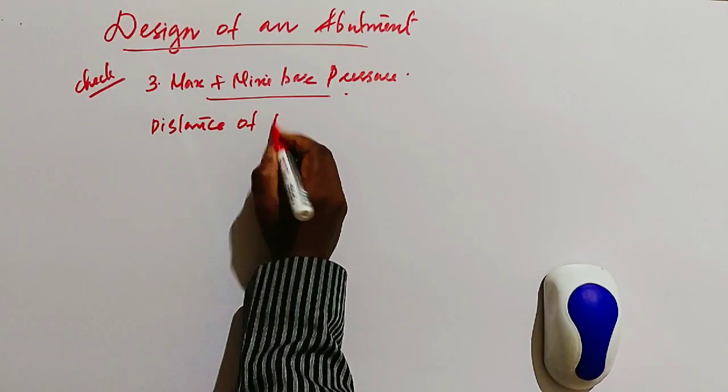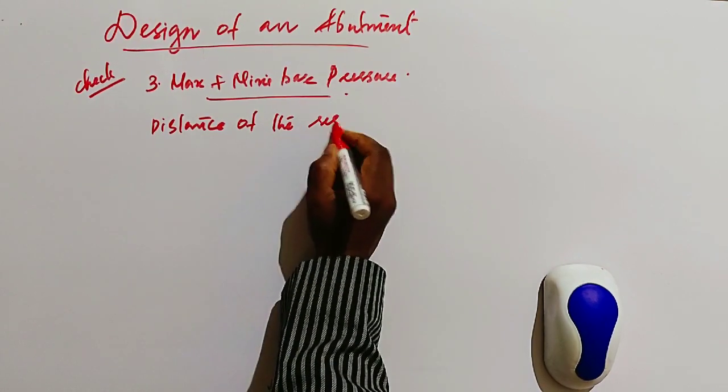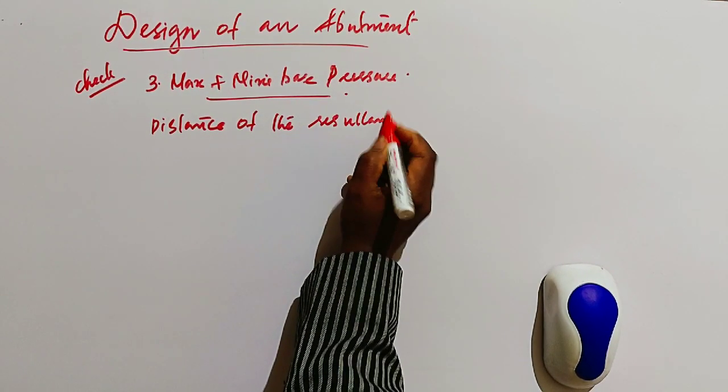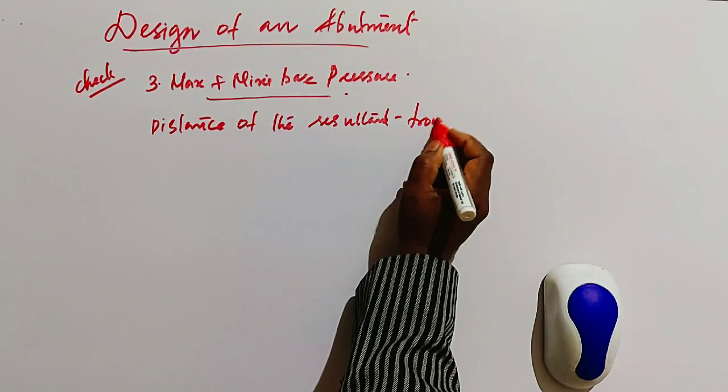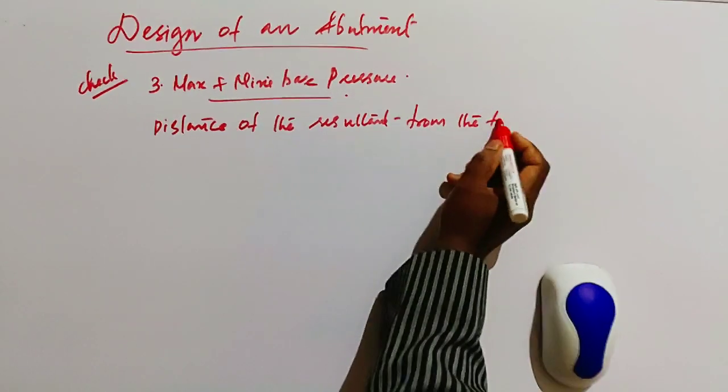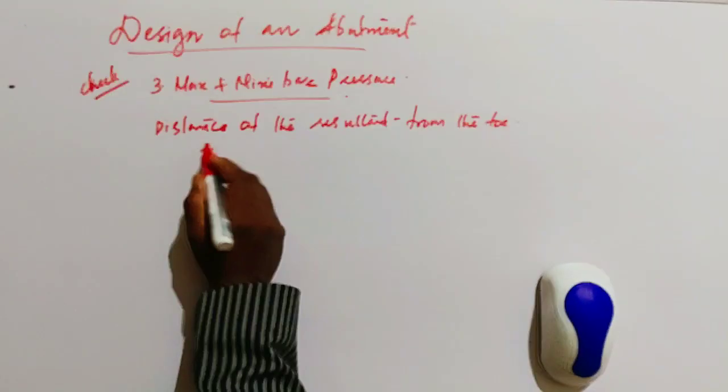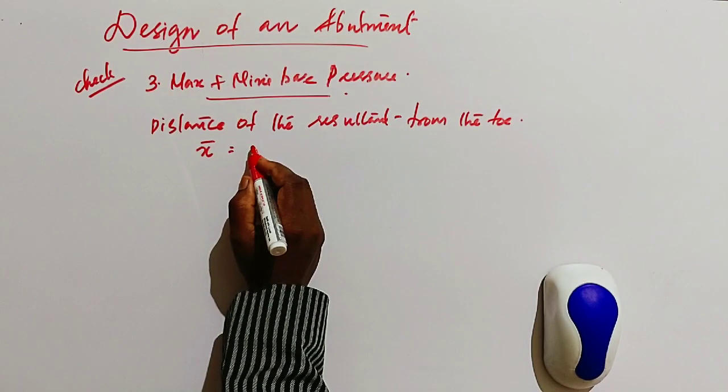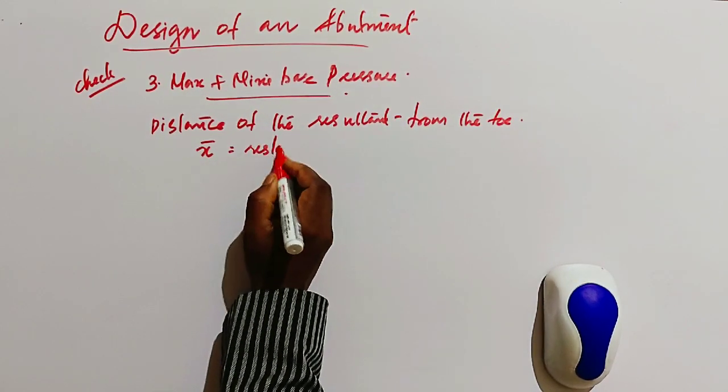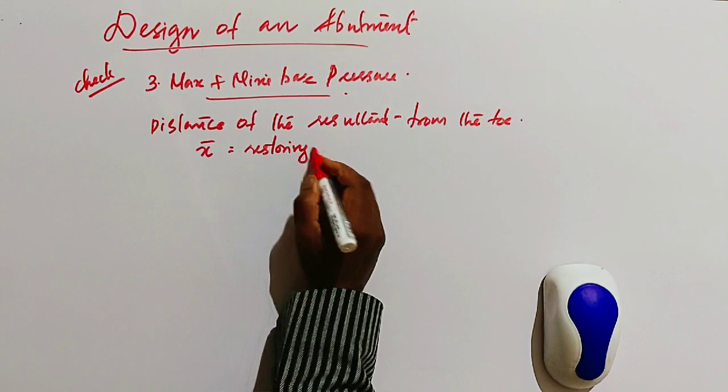We have to calculate the x-bar distance, distance of the resultant from the toe. That is restoring moment minus moment due to overturning divided by resultant.